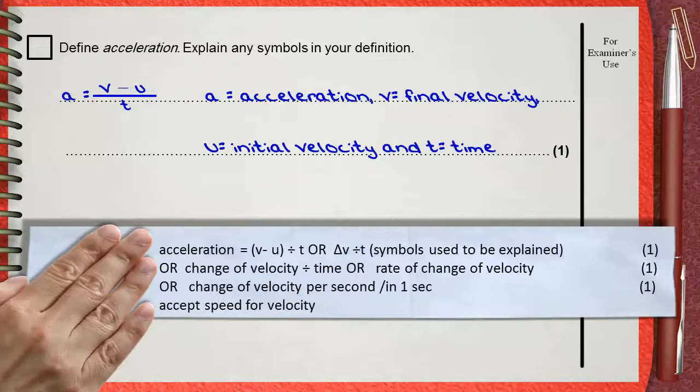For any one of the following: acceleration equals v minus u divided by t, or you can say delta v divided by t, but the symbols must be explained. You can also say change of velocity divided by time, or rate of change of velocity. Another possibility is to say that the acceleration is the change of velocity per one second.